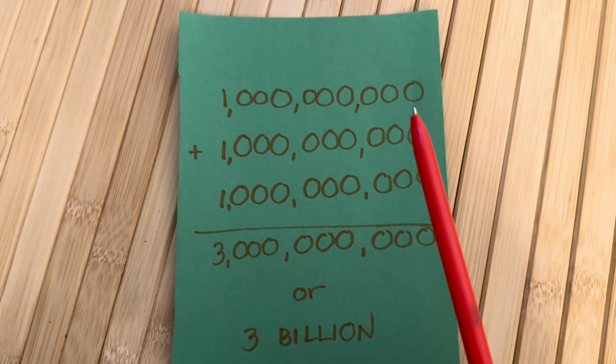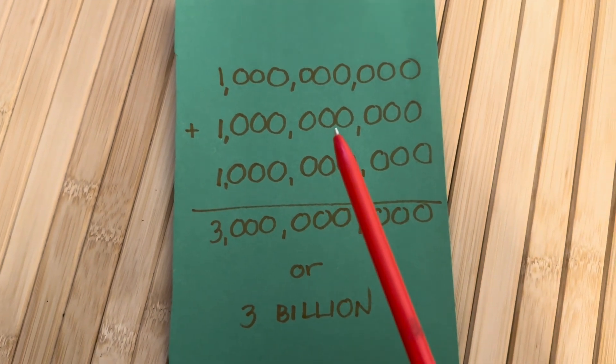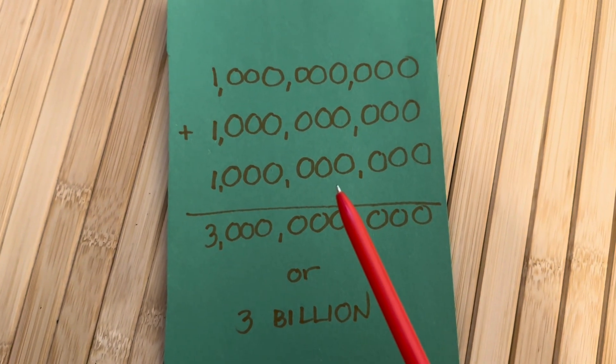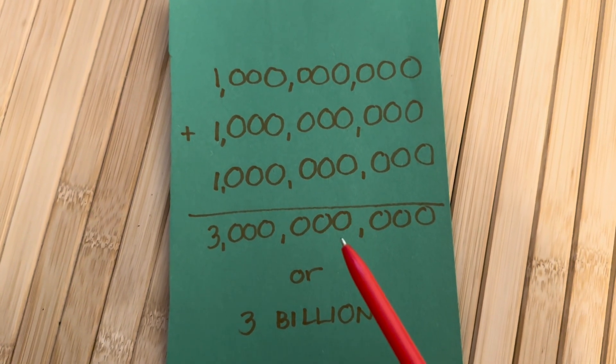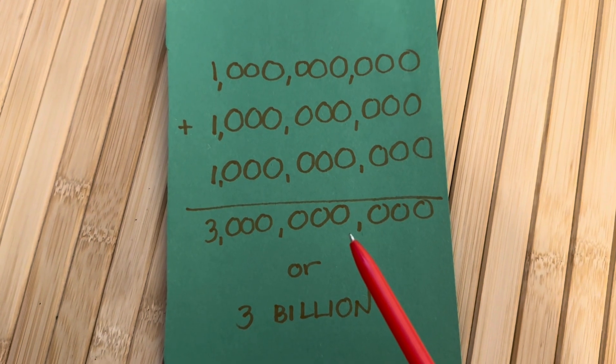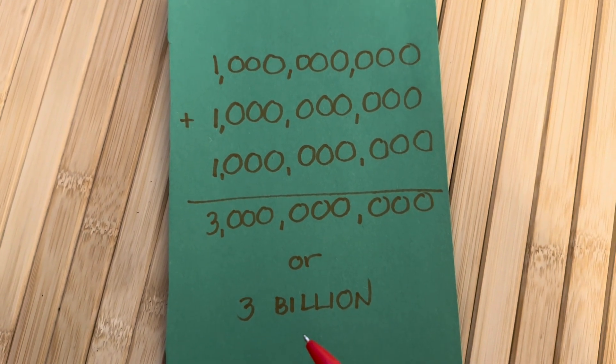And lastly, 1 billion plus 1 billion plus 1 billion is equals to 3 billion.